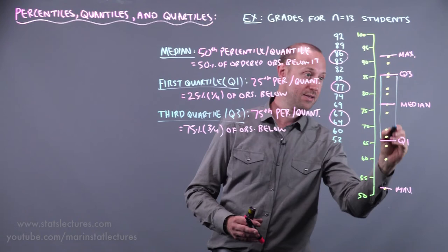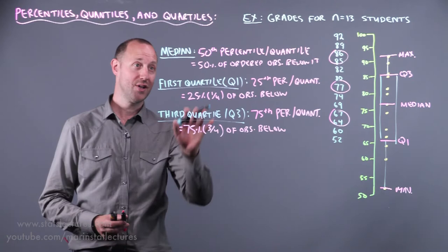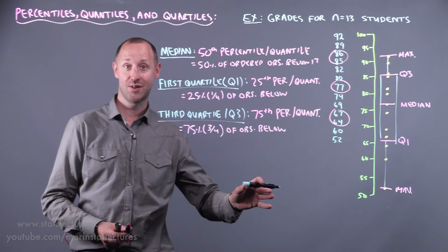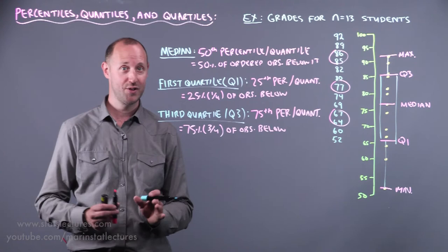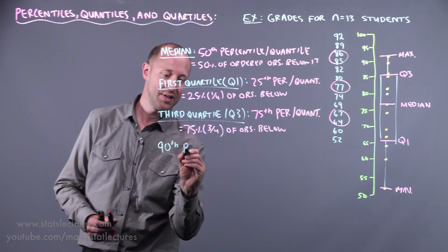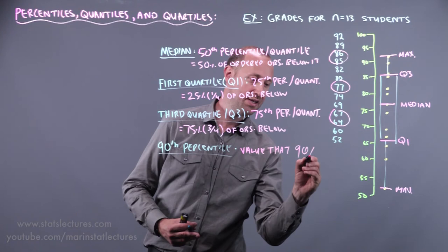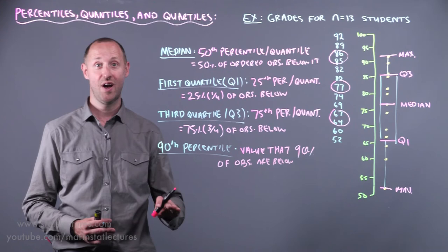Now quartiles are commonly used percentiles or quantiles as they divide the data into four equally sized quarters. And they're a common description you see. But really, you can report any value of percentile or quantile. So just as an example, the 90th percentile, this gives us the value that 90% of observations are below. Again, the 40th percentile, which value are 40% of observations less than.